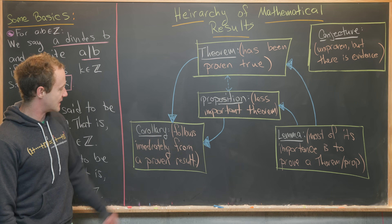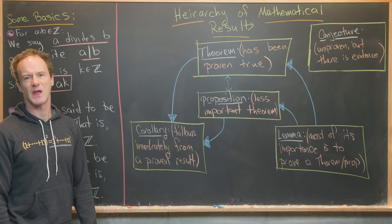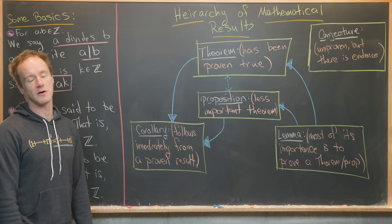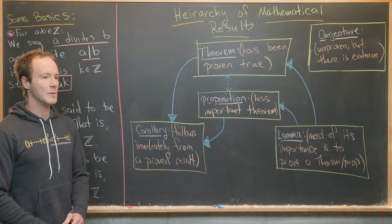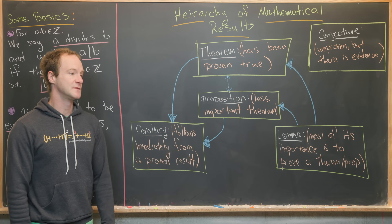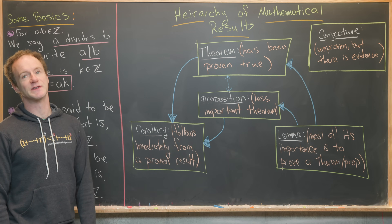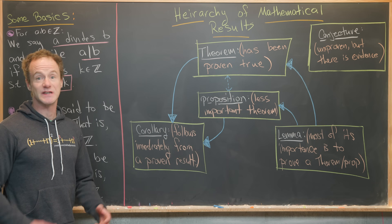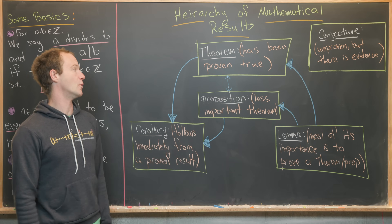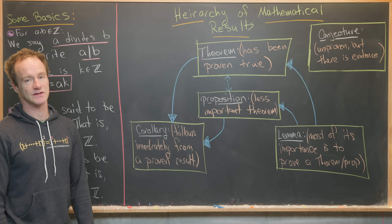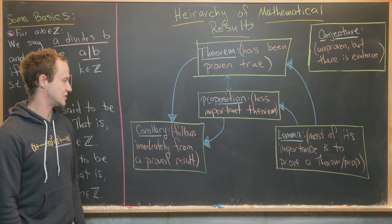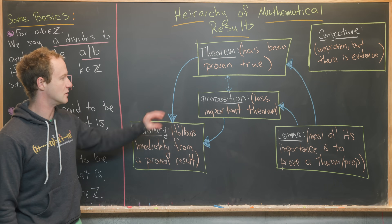Then we've got the idea of a corollary. This is a result that follows immediately from a theorem or proposition. Often there is no proof given in a textbook for corollaries — sometimes the proof is left as an exercise, and when you work through it, it's quite short, built off of whatever theorem or proposition it is a corollary to. I've got an arrow going from theorem and proposition to corollary to show this.